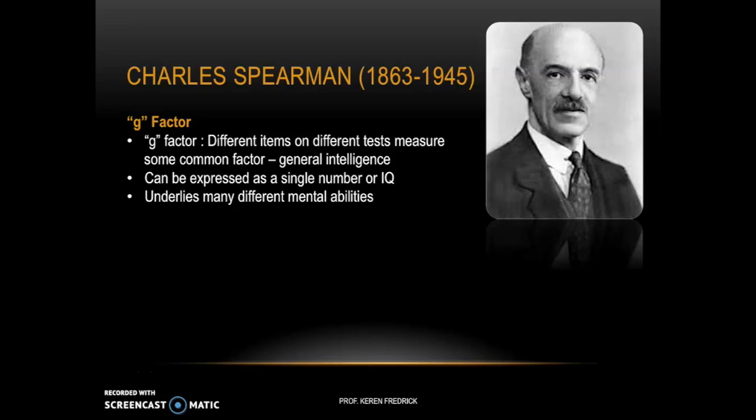He believed that when an individual performs in different intelligence tests — say a verbal intelligence test or a performance intelligence test — a person who does really well in one may also do really well in the other. That could be because of the underlying general intelligence, which is the g-factor. He believed that different items on different tests measure a common factor, general intelligence, which can be expressed as a single number called an IQ. He also believed that this general intelligence underlies all other mental abilities.